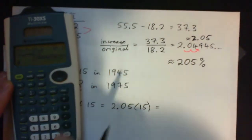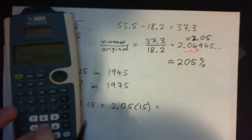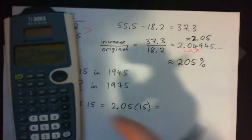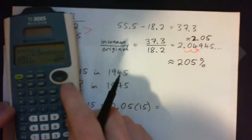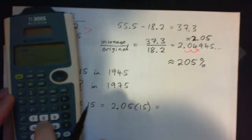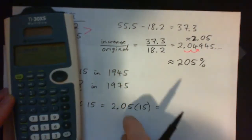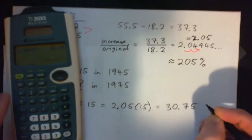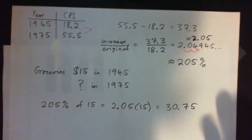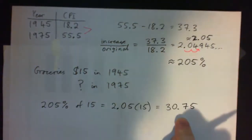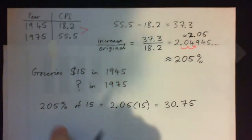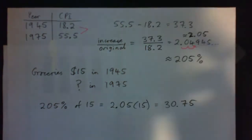2.05 times 15 is 30.75, but that's not the answer. That's the increase. This is the amount of increase. It increased by 205 percent. I've got 205 percent of 15, that's the increase, but I have to add on the 15.